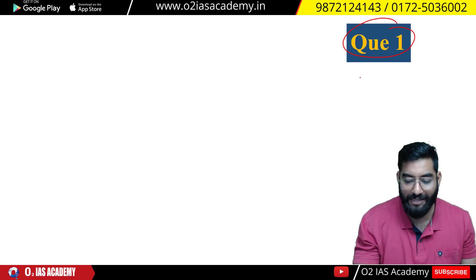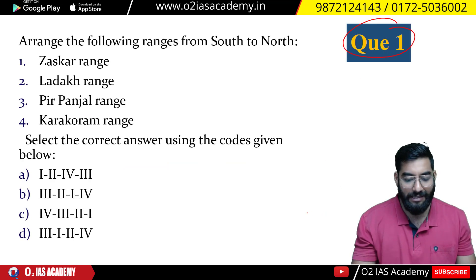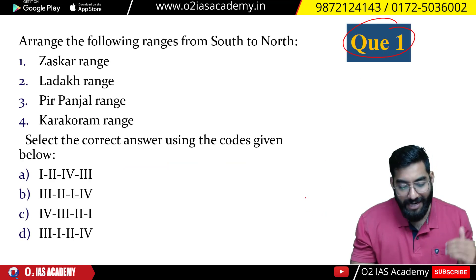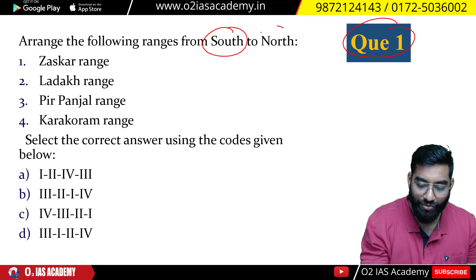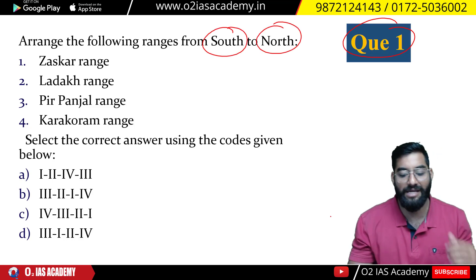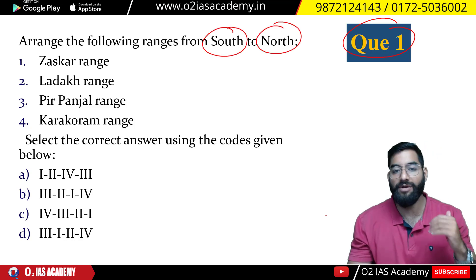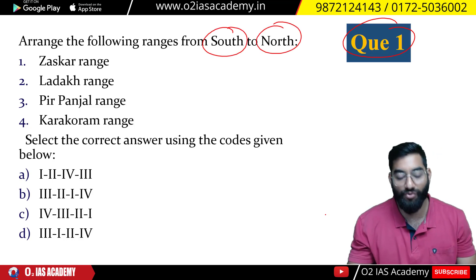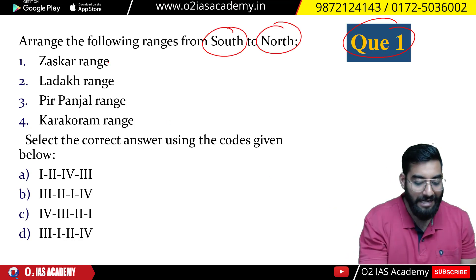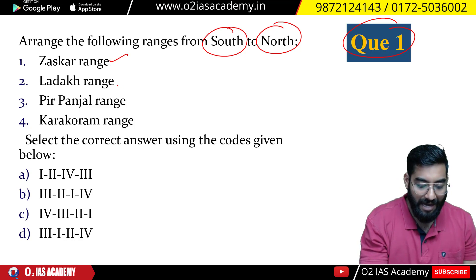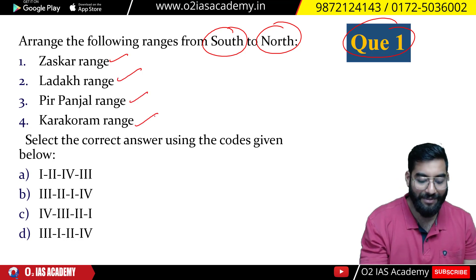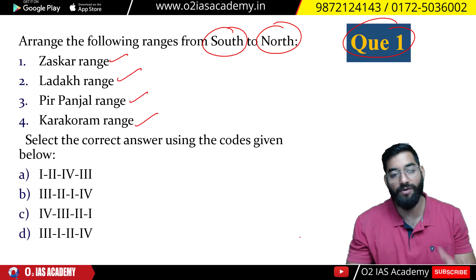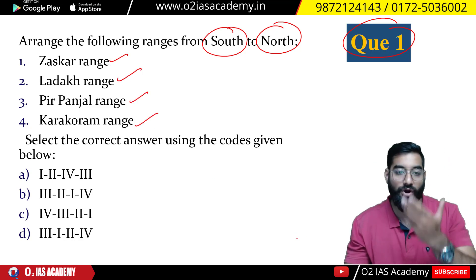Question number 1: Consider and arrange the following mountain ranges from south to north — Ladakh, Zaskar range, Ladakh, Pir Panjal, and Karakoram. Arrange them from south to north.